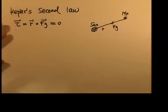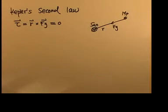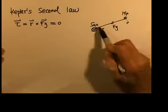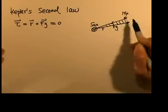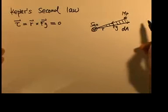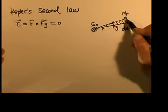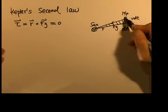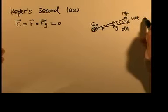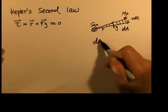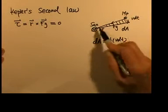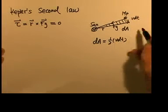Now I'm going to prove Kepler's second law. The radius vector drawn from the sun to a planet sweeps out an area dA in time dt. If the planet moves with velocity v, then v times dt gives the distance it travels, and the area of this triangle dA equals one-half times base times height, because it's very small and can be viewed as a triangle, where the height is vector r.